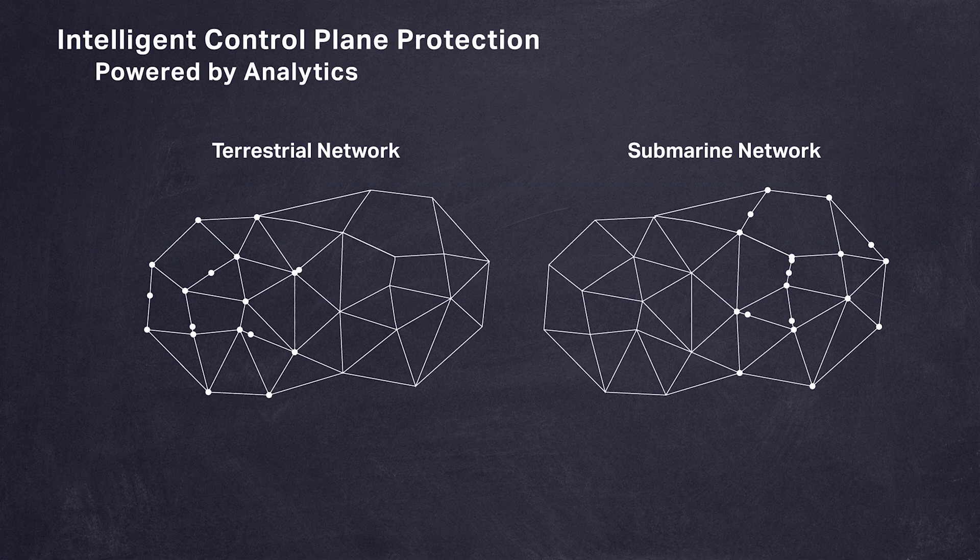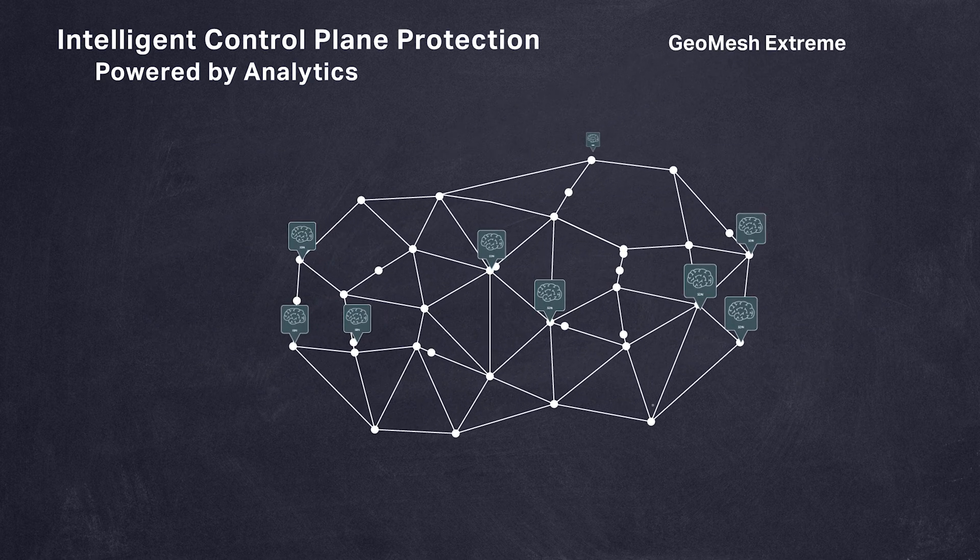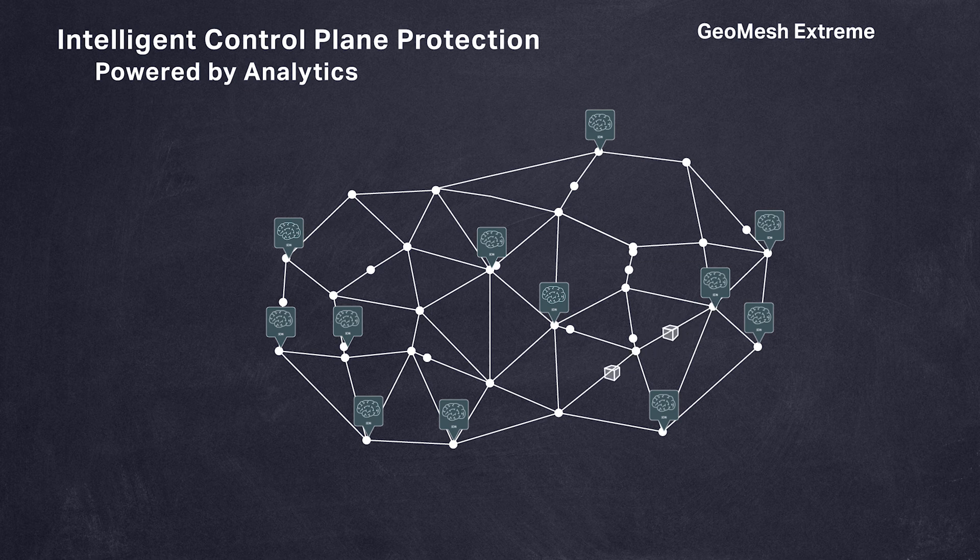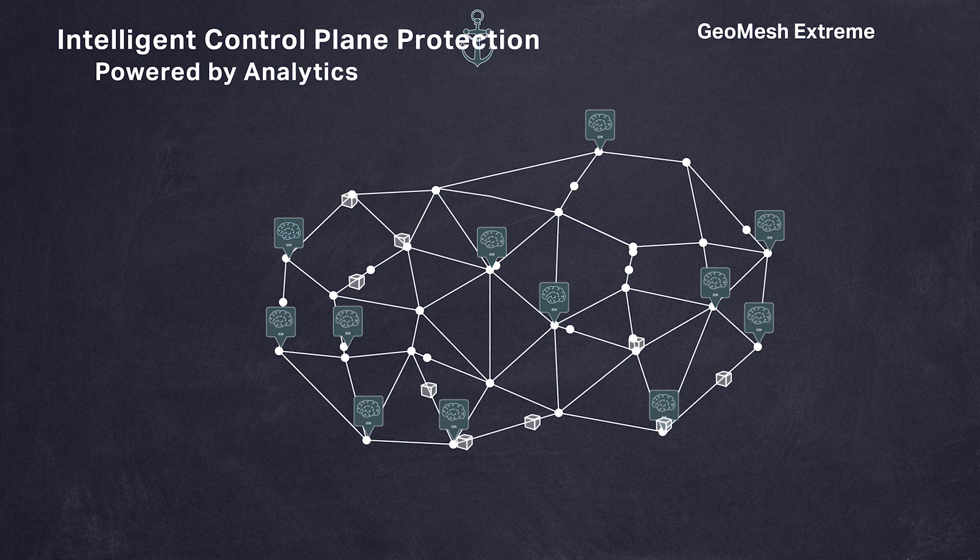SANTA's intelligent control plane allows multi-terabit submarine cables and book-ended terrestrial backhaul networks to be meshed together over land and undersea to ensure the highest level of end-to-end protection and availability. There's no plan B for submarine networks.